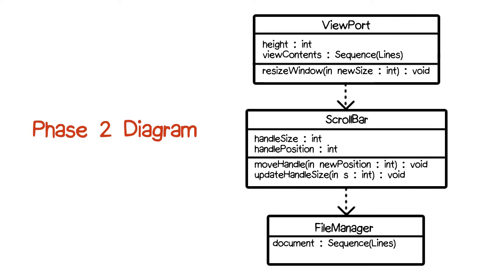Here's a UML diagram we might come up with. On this, we have the viewport at the top, the scroll bar in the middle, and the file manager at the bottom.